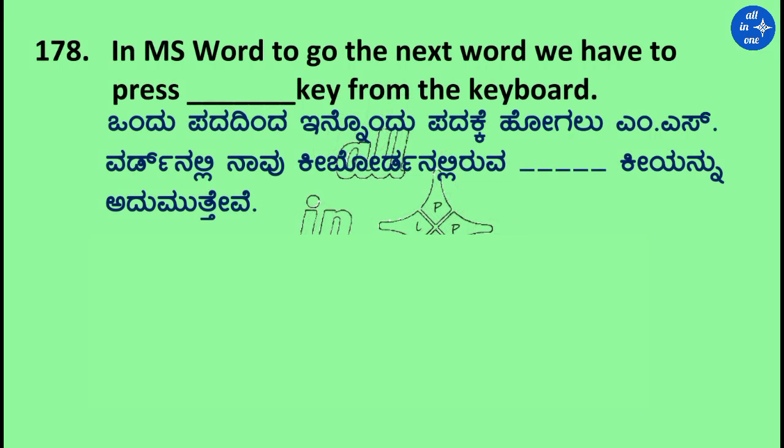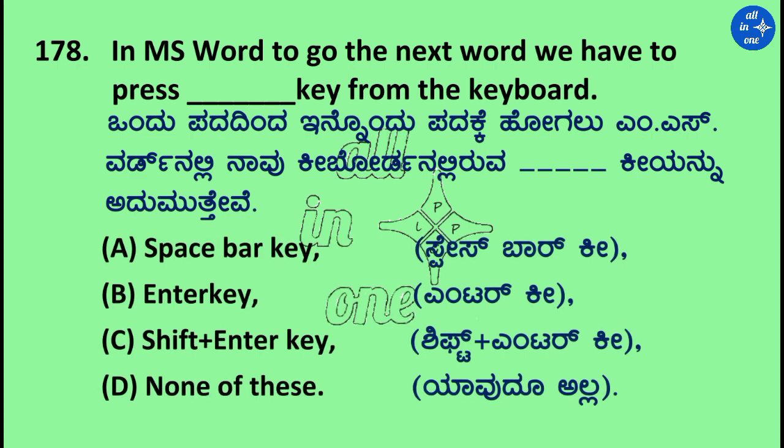Question: In MS Word, to go to the next word, we have to press the dash key from the keyboard. Options: Space bar key, Enter key, Shift+Enter, and None of these. Right answer is Space bar key.